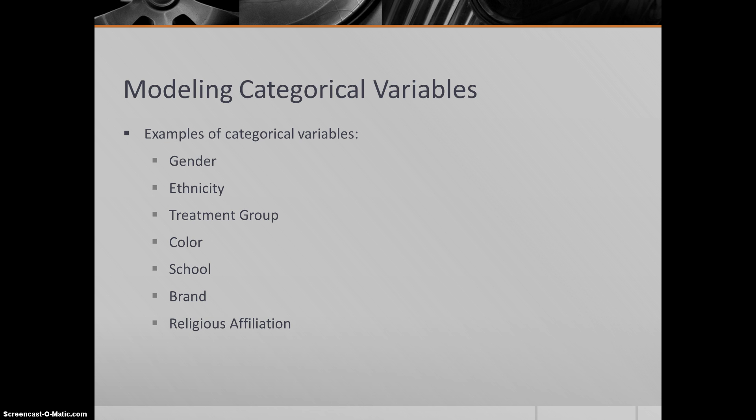Categorical variables - to refresh your memory - those would be things like gender, ethnicity, maybe different treatment groups in an experiment, color. Perhaps you want to know if color affects the resale value of cars. Different schools, maybe different brands of a product, religious affiliation - these would all be categorical variables. There's just different groups, there's no hierarchy. One color is not more or less than another color. One gender is not more or less than the other. But we still want to look at differences statistically.